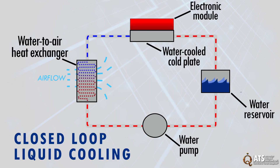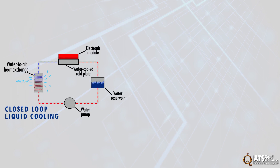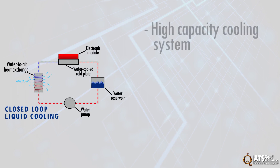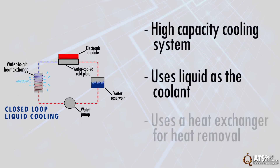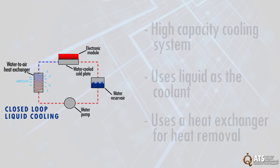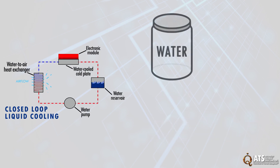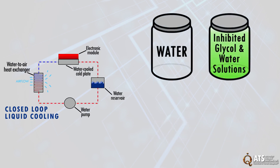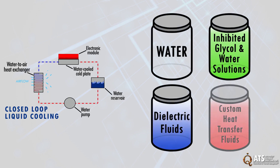Cold plates are an integral part of closed-loop liquid cooling. This system is defined as a high-capacity cooling system that uses liquid as a coolant and a heat exchanger for heat removal from the coolant. The most commonly used fluids are water, inhibited glycol and water solutions, dielectric fluids, and custom-designed transfer fluids.